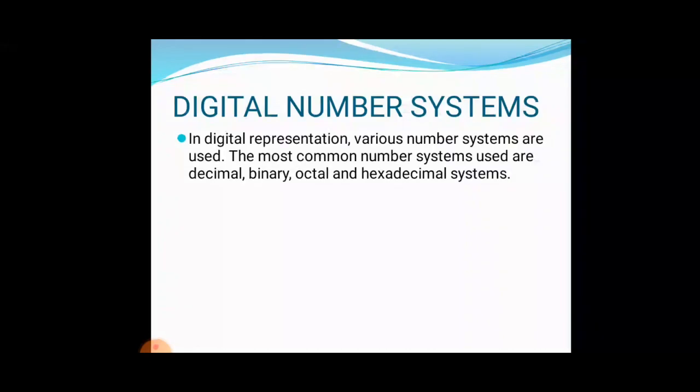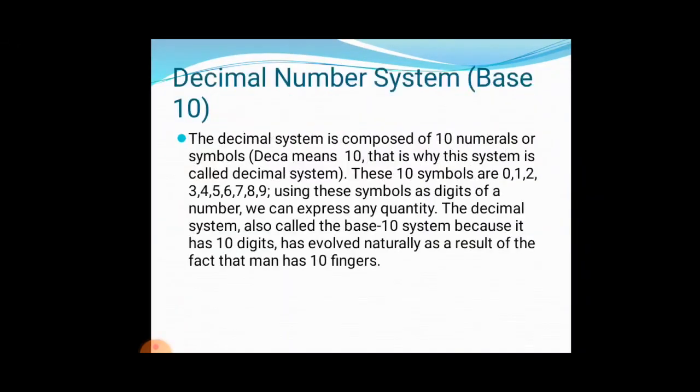First, decimal number system, base 10. What is the base of decimal? 10. The decimal system is composed of 10 numerals or symbols. Deca means 10. That is why this system is called decimal system. These 10 symbols are 0, 1, 2, 3, 4, 5, 6, 7, 8, 9.